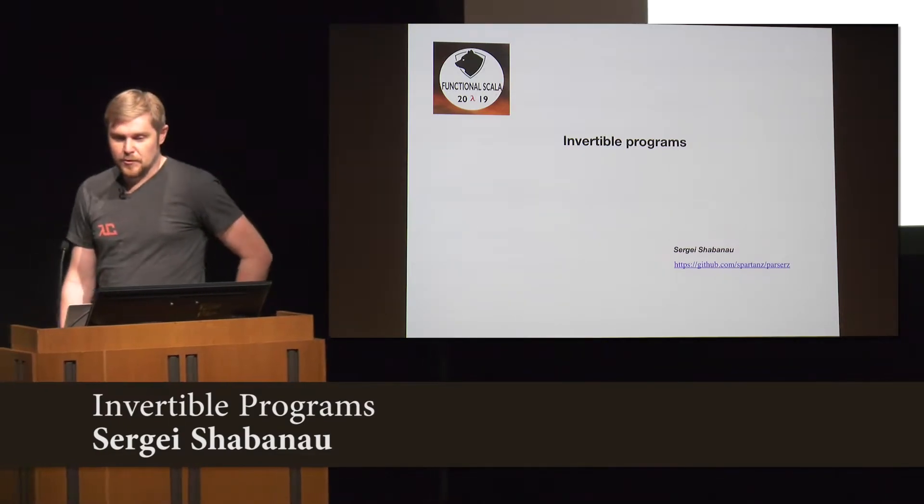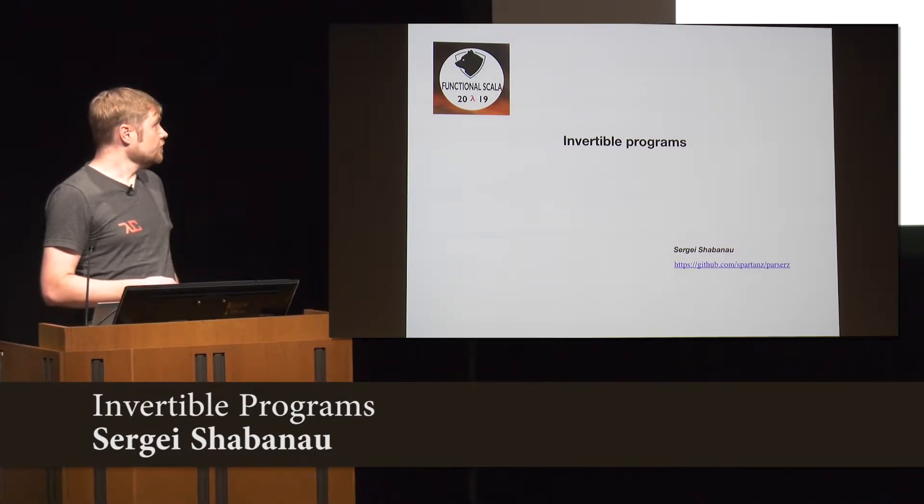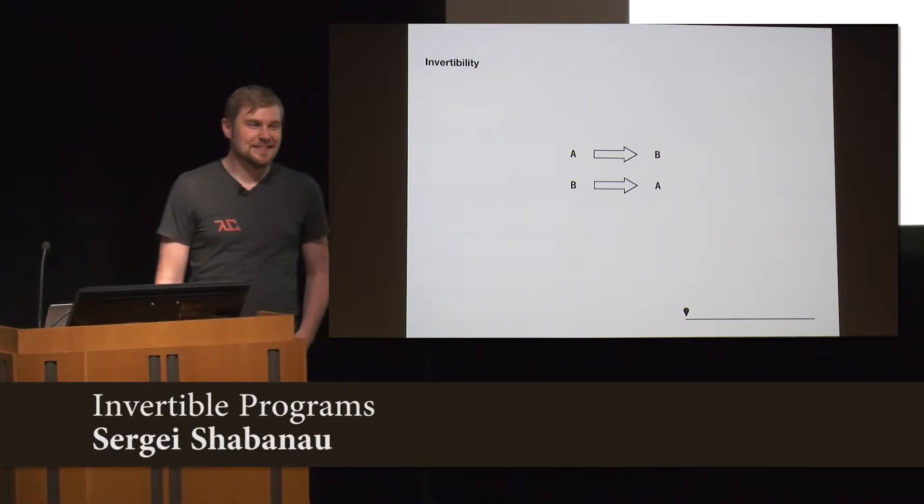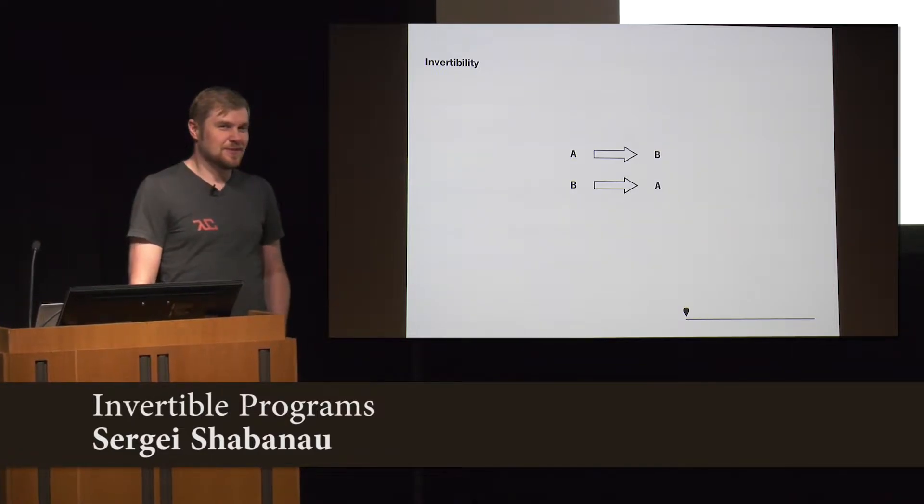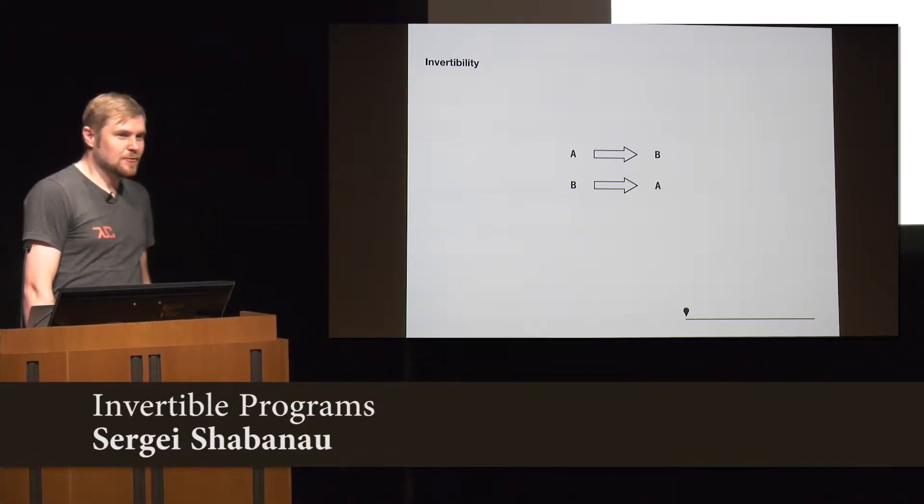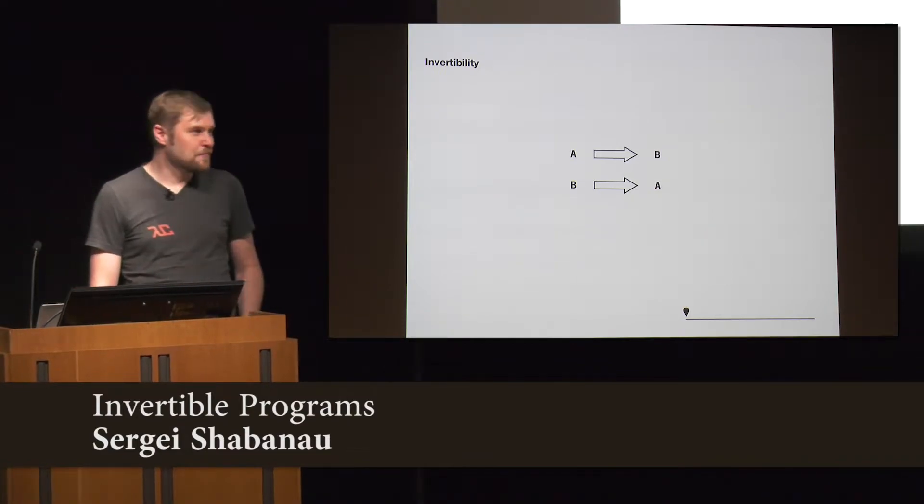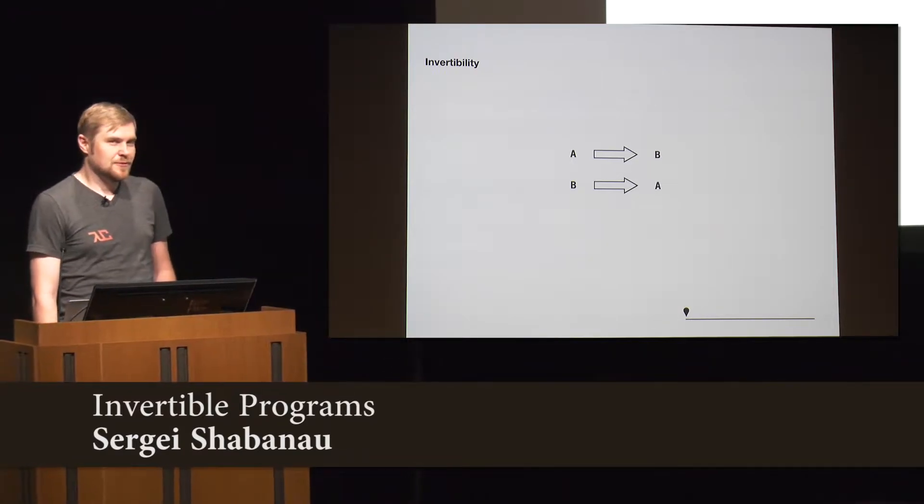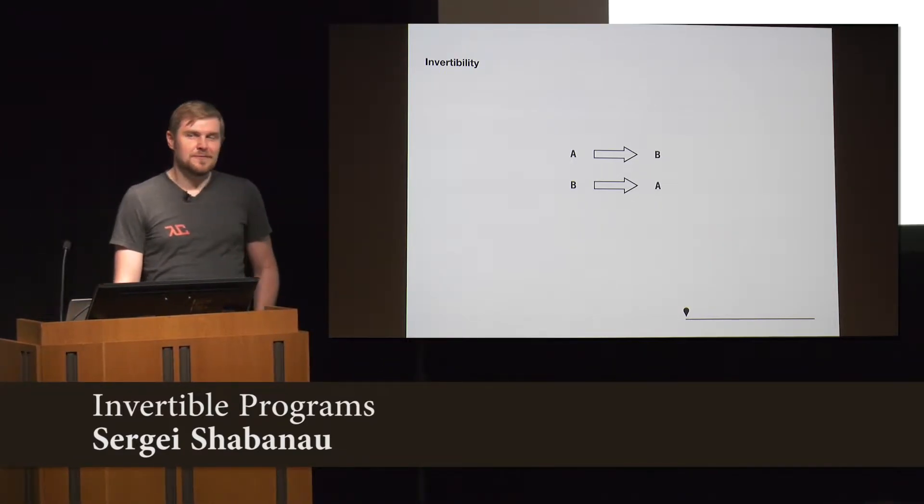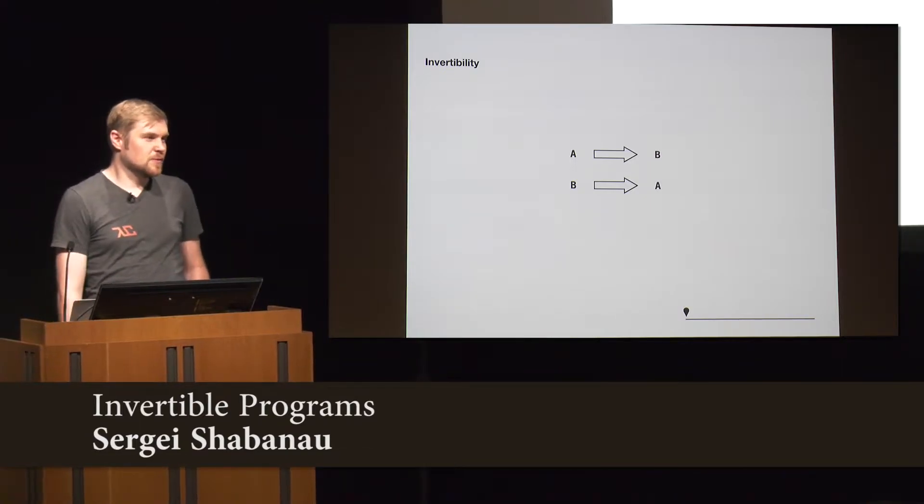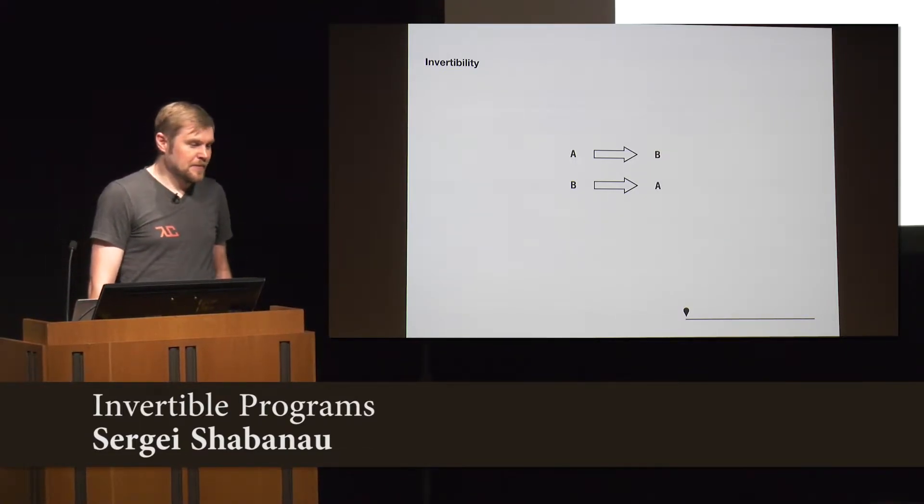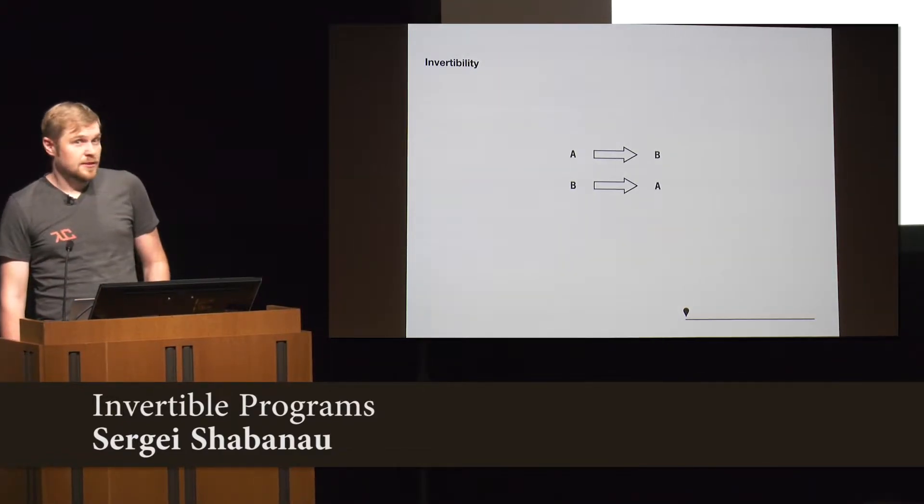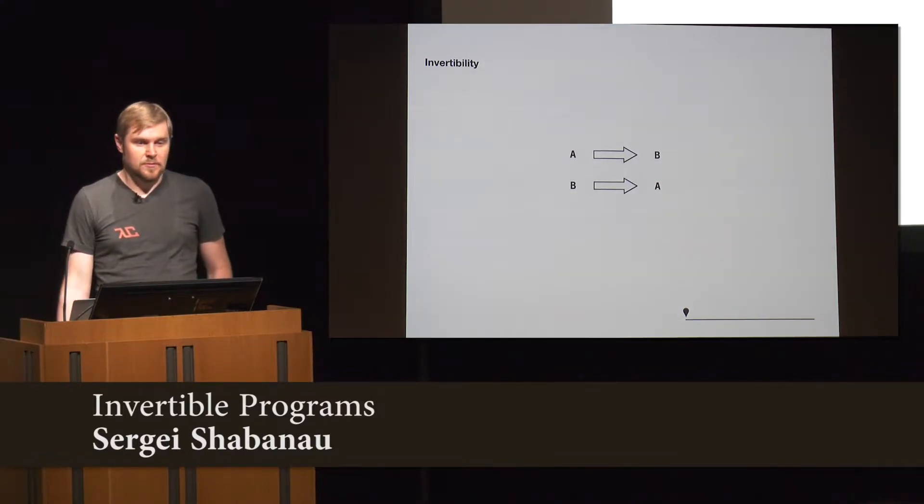So we need to talk about invertible programs. Look at these two beautiful functions. They can represent things like encoders and decoders, or they could go between two different representations of the same thing. But as simple as they are, implementation of these functions may be rather complex. Imagine if it's not one line of functions, but maybe 20 lines or even 100 lines. The way we usually go with such things would be to implement them and test extensively that this implementation match one another.